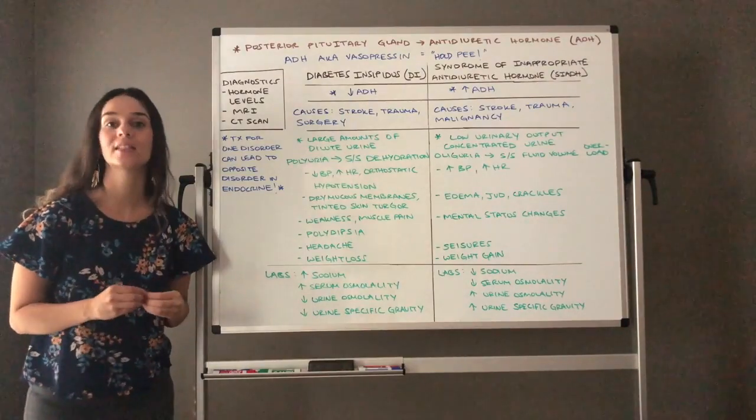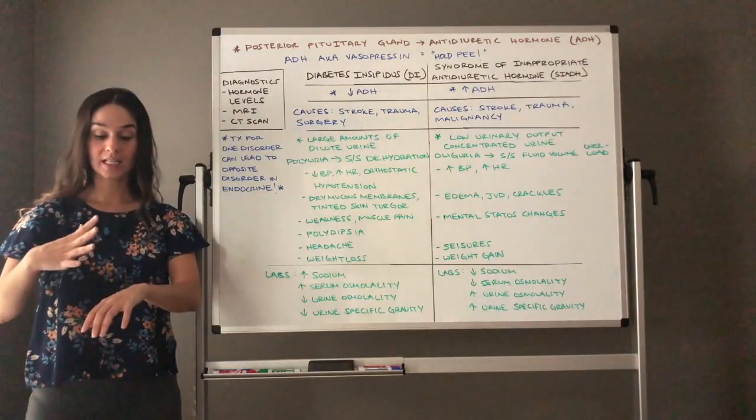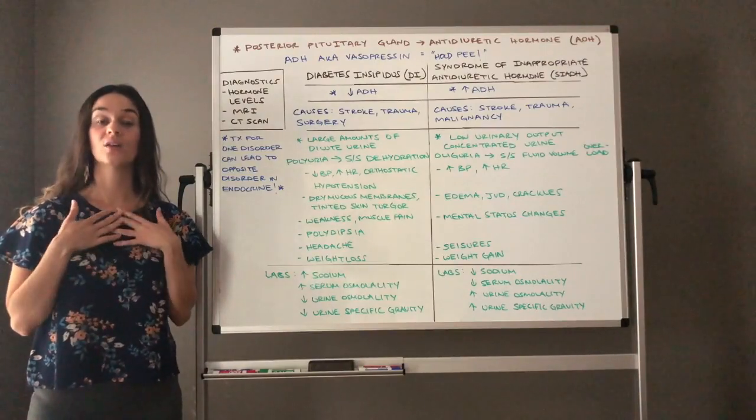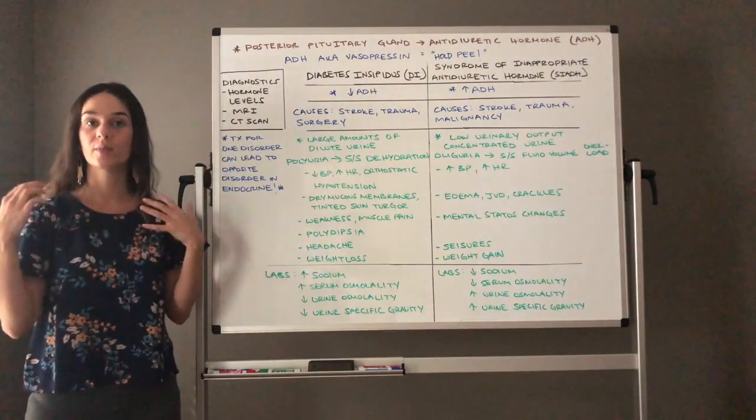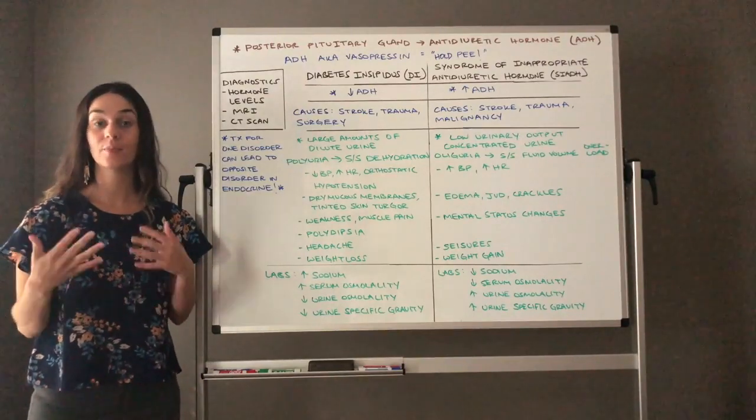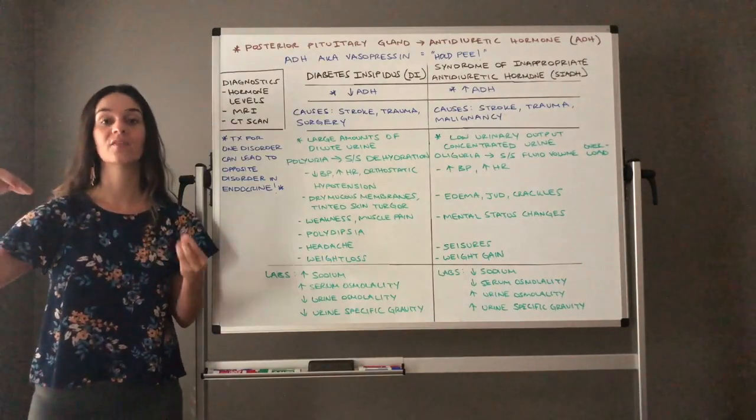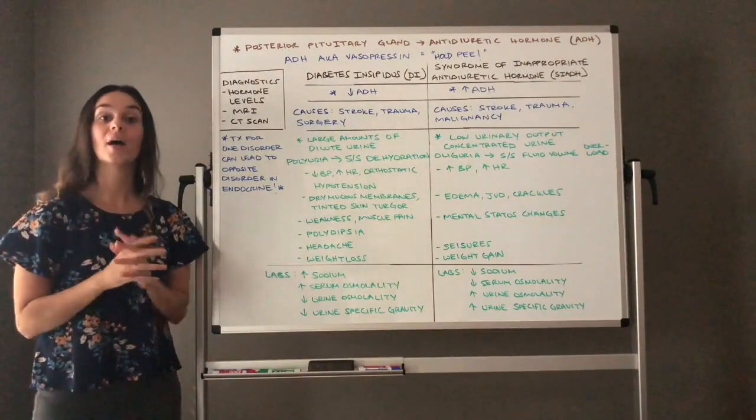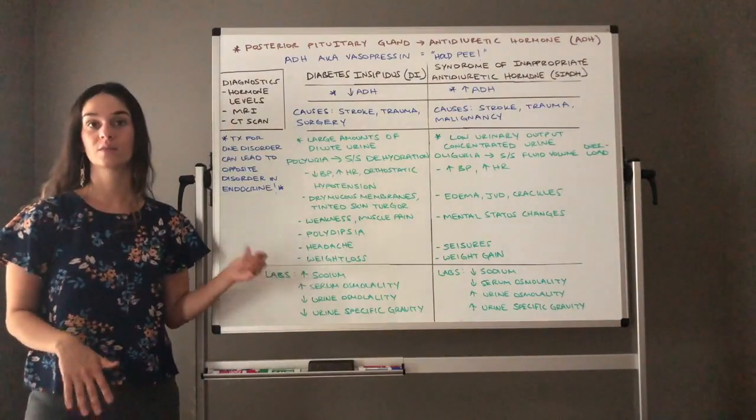Dry mucous membranes, tented skin turgor, meaning if I were to pull their skin up, we want elastic. We want it to go right back, to recoil or bounce back. If you're dehydrated, you don't have that elasticity. Remember, this is not the best place to check skin turgor. You always want to check it over the sternum, the clavicle, the forehead, because those are the places that lose elasticity last. But if I were to check the skin turgor on the sternum, it could stay tented or raised because they have very low fluid in their body. Weakness, muscle pain, polydipsia or thirst because they've lost a lot of fluid, headaches, and they can have weight loss with these clients.